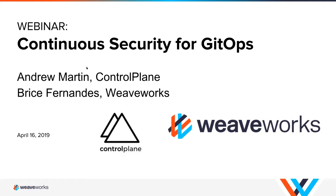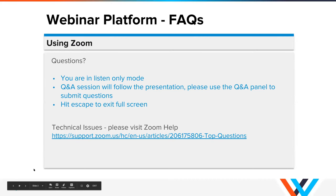Hello and welcome everybody to our webinar today. Our topic today is continuous security for GitOps, presented by ControlPlane and WeaveWorks. Please note that this call is being recorded. At this time, all participants are in listen-only mode. If you would like to ask any questions, please use the Q&A panel in Zoom and we will address those questions at the end of the presentations.